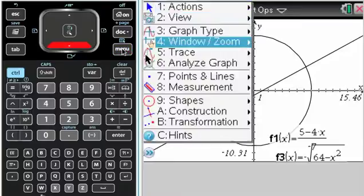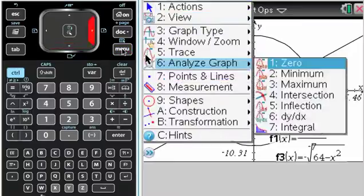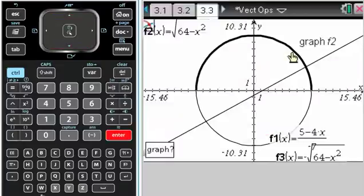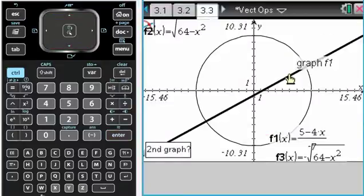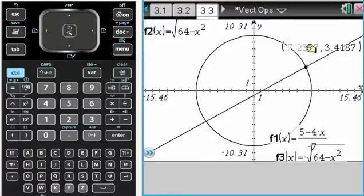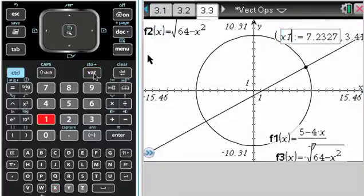Now what I want to do is I want to find the intersection because the solutions to that equation are the vectors that we're looking for. So analyze graph, intersection. Select the first graph. Select the second graph to the left, to the right. Now what I'm going to do here is I'm going to click on that. I'm going to go control and then store. Store that as X1.